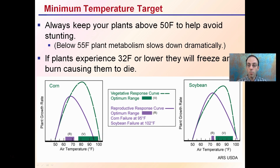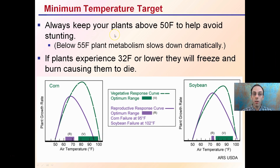So the minimum temperature target: always keep your plants above 50 degrees Fahrenheit to help avoid stunting. Below 55 degrees, plant metabolism slows down dramatically. If plants experience 32 degrees Fahrenheit or lower, they will freeze and burn, causing them to die. Even at 35 degrees, that's really going to potentially do some damage, and definitely 32 and below will basically kill the plants.